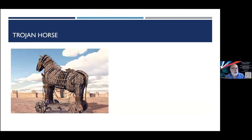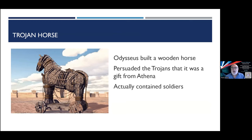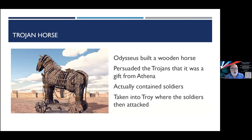Another example we all know is the Trojan Horse. There's a war in Troy and Odysseus can't get in, so he builds a wooden horse and persuades the Trojans it's a gift from Athena. They take it into the city, but it contains soldiers who get out, attack, and open the gates — and in comes Odysseus and the rest of his army.